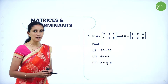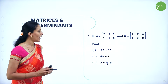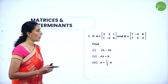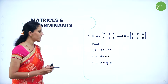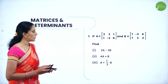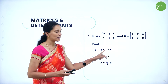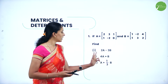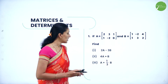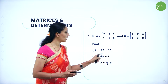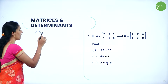Let's look at the first question. We have A equal to [2, 3, 1; 1, -2, 0] and B equal to [1, -2, 4; 1, 3, 2]. Find 2A minus 3B, 4A plus B, and A plus (1/3)B. So here we need to find the scalar multiplication and subtract in the form of 2A minus 3B, add in the form of 4A plus B, and add in the form of A plus (1/3)B. First let us find 2A minus 3B: that is 2 into matrix A minus 3 times matrix B.